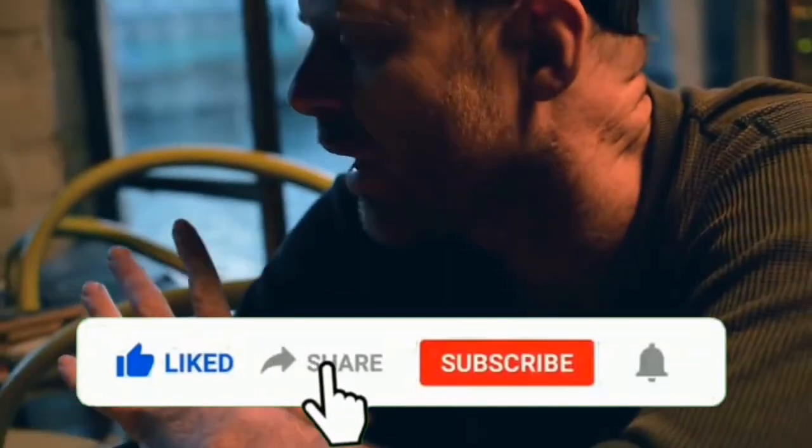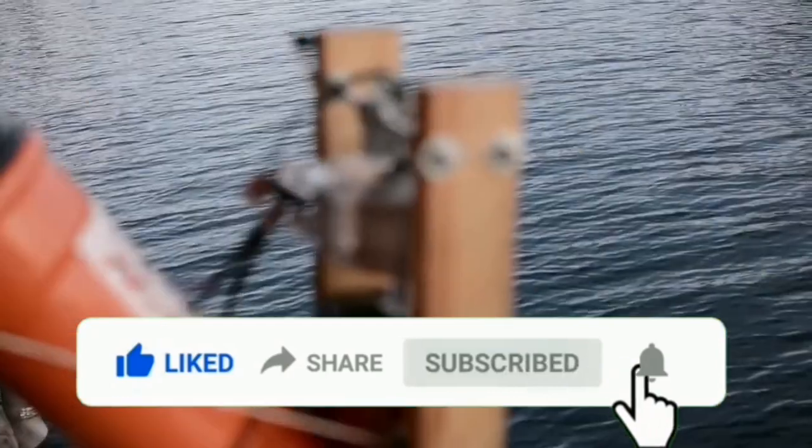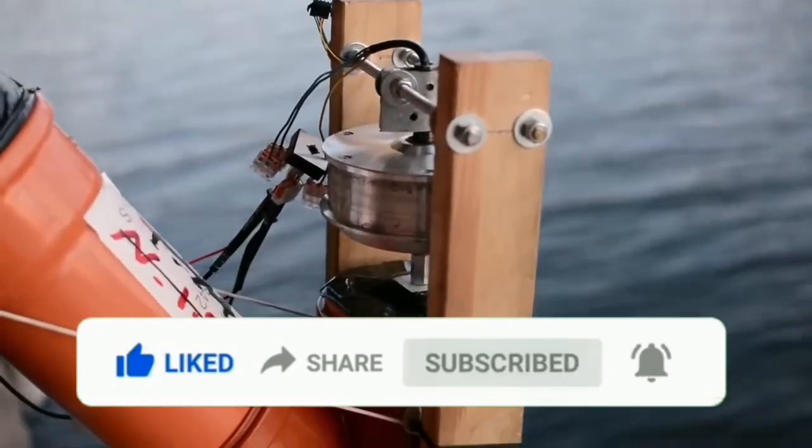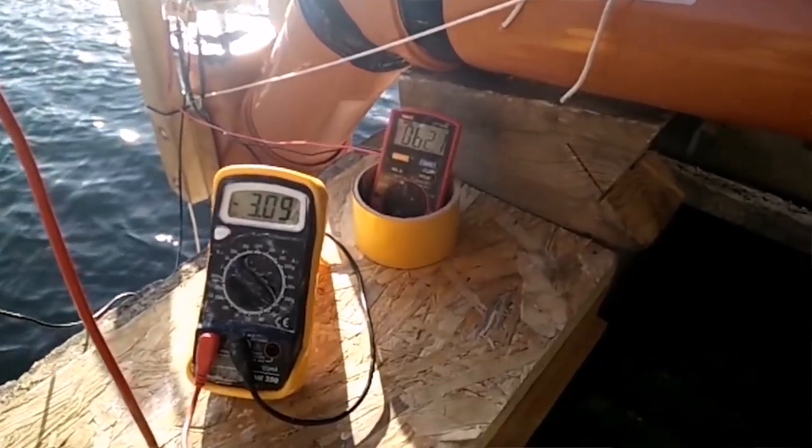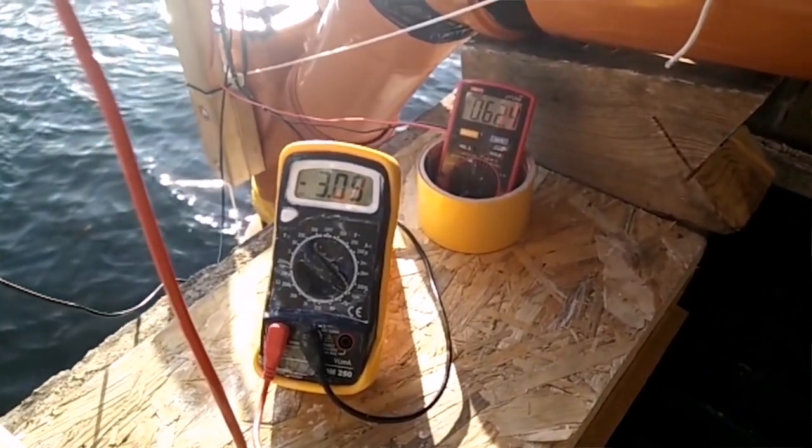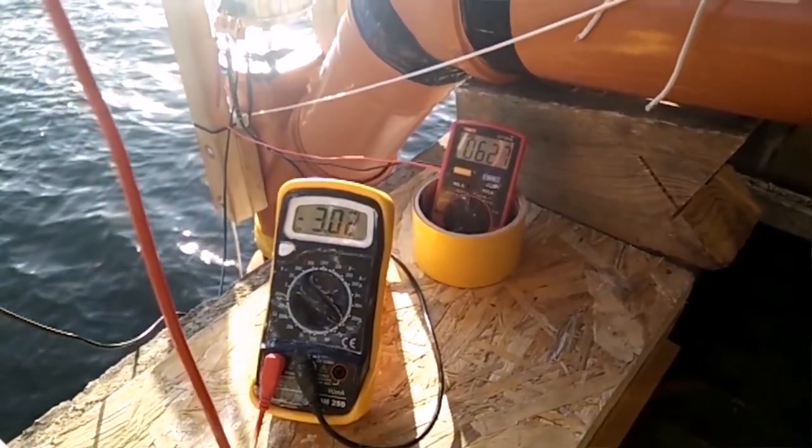Basically the turbine is currently putting out 192 watts with a 2.5 meter drop and about 35 liters per second. I still need to measure the flow rate. The sweet spot, like the top of the power curve, is around 60 something volts at three point something amps for 192 watts.